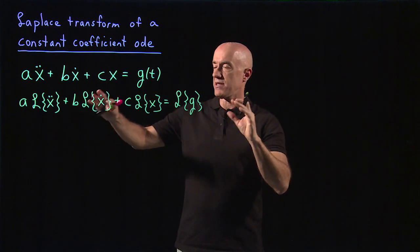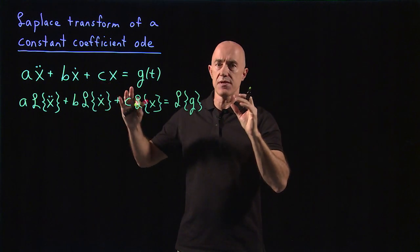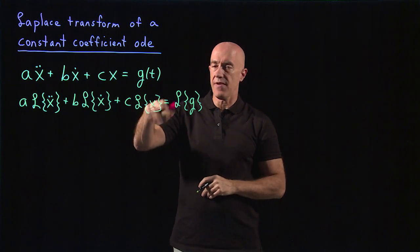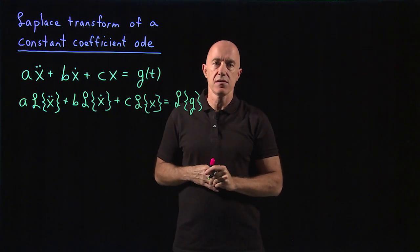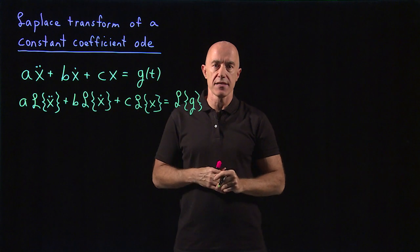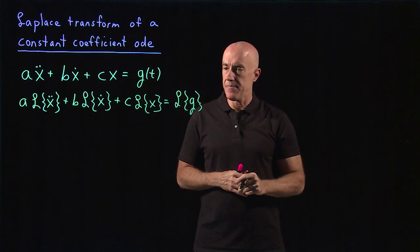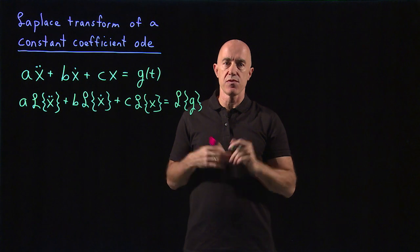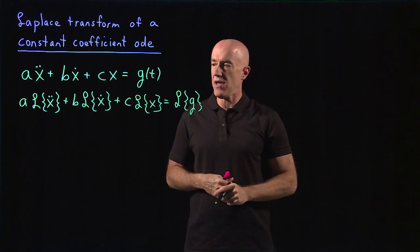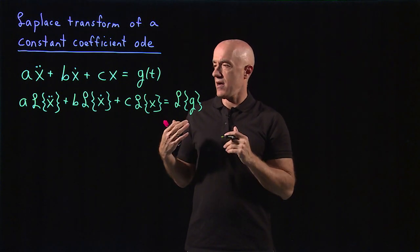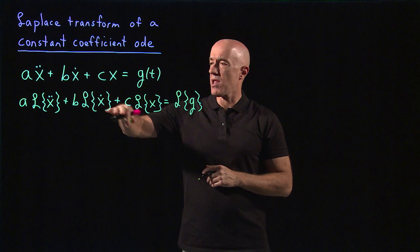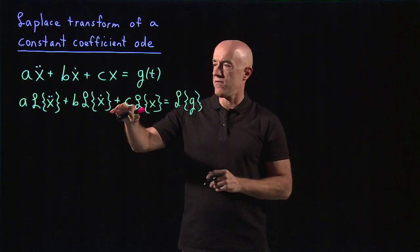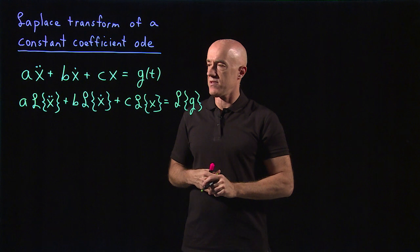We've Laplace transformed the differential equation. The Laplace transform of x(t) is what we call capital X of s. The Laplace transform of g(t) is what we call capital G of s. But the stumbling block is we need to find the Laplace transform of the derivatives of x.